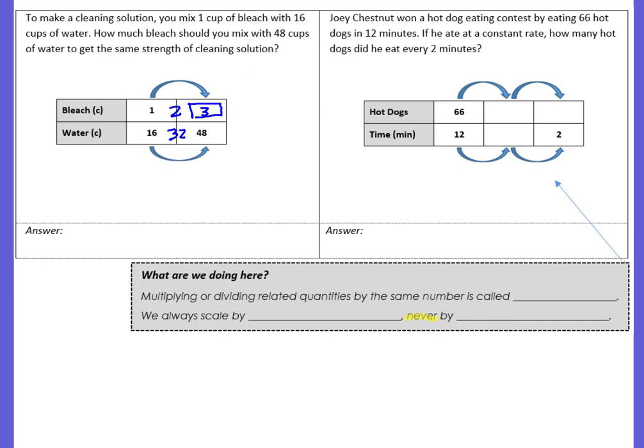Another way is just to use a scale factor. I can go from 16 to 48 by multiplying by a scale factor of 3. So I'm going to use the same scale factor and multiply 1 times 3 and I get 3. Both methods work when using a ratio table to find the unknown amount.